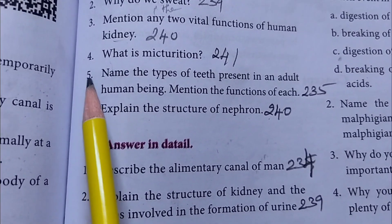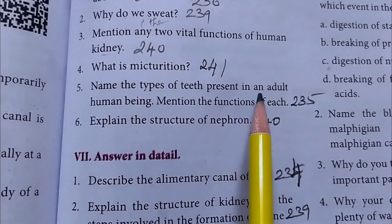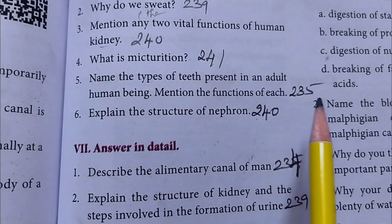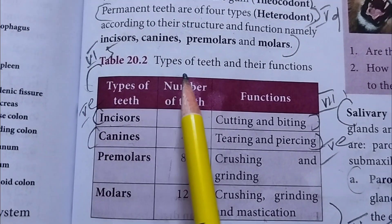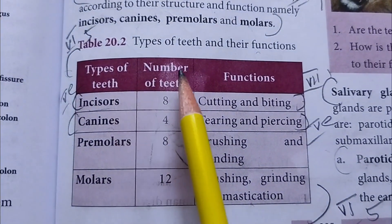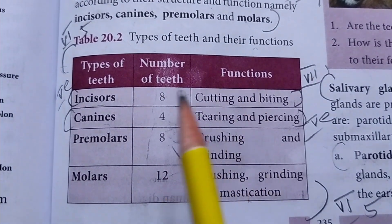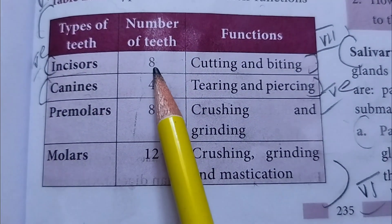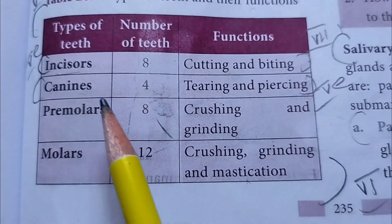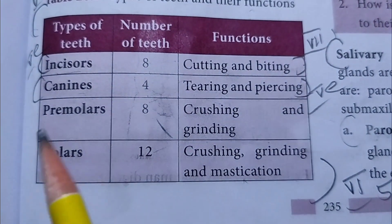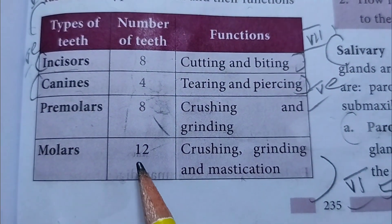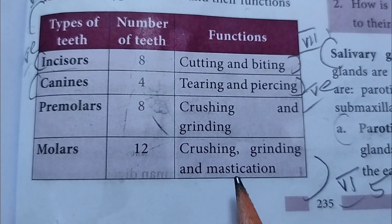5th question: Name the types of teeth present in an adult human being and mention the functions of each. Types of teeth and their functions: Incisors - cutting and biting; Canines - tearing and piercing; Premolars (8) - crushing and grinding; Molars (12) - crushing, grinding and mastication.